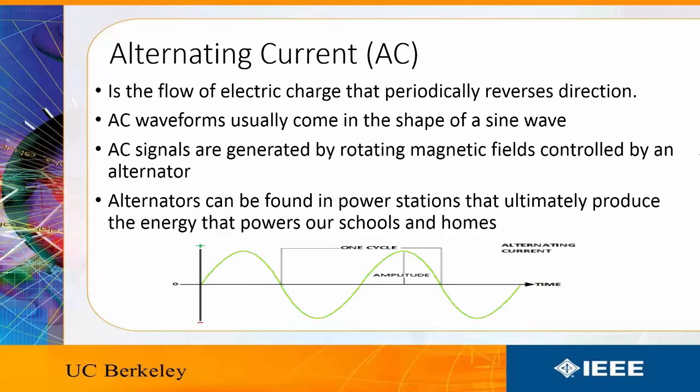Because of this fact, the prominence of alternating current came about. Alternating or AC current is the flow of electrical charge that periodically reverses direction.